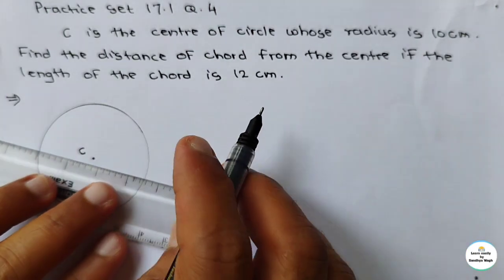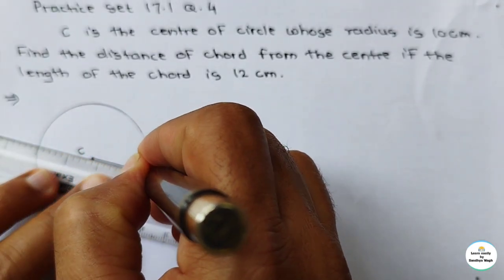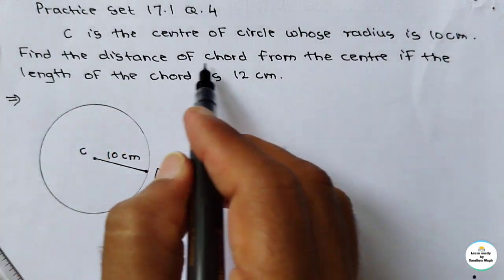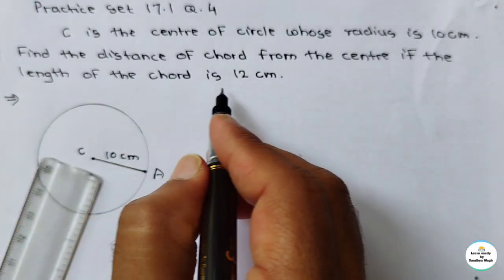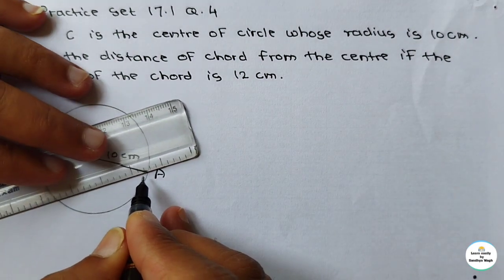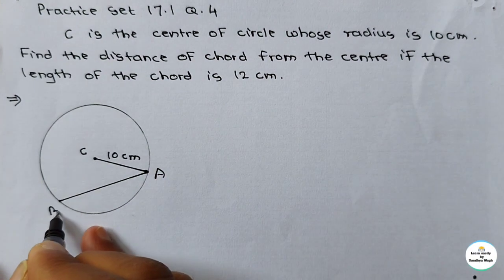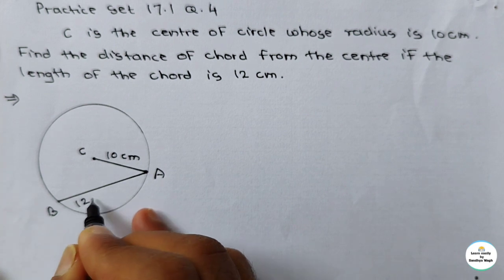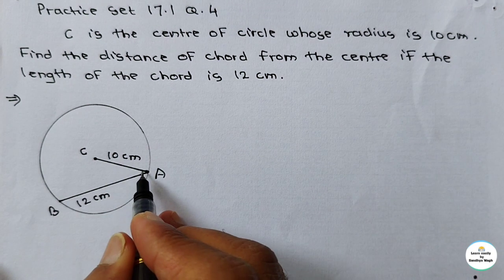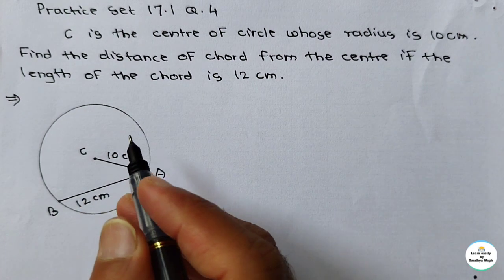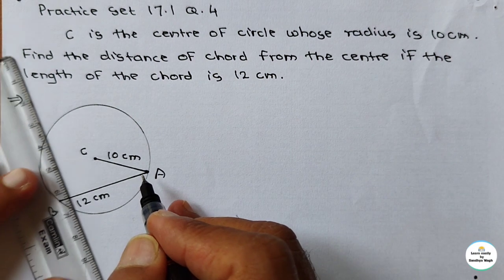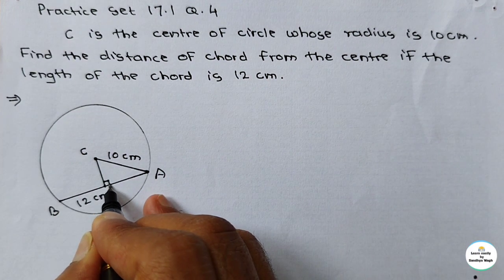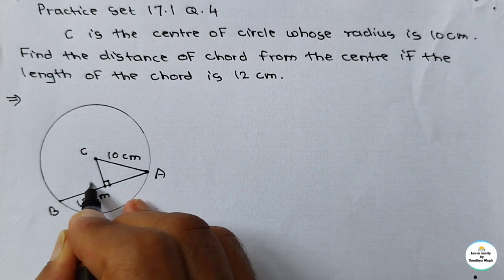Chord AB length is given as 12 cm and we have to find the distance of this chord from the center — the minimum distance. To get the minimum distance, we must draw a perpendicular to the chord from the center. Let this point be P, and this angle is 90 degrees. As per the property of circle and chord, if we draw a perpendicular to any chord from the center, it bisects the chord.